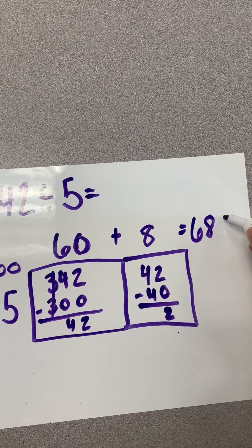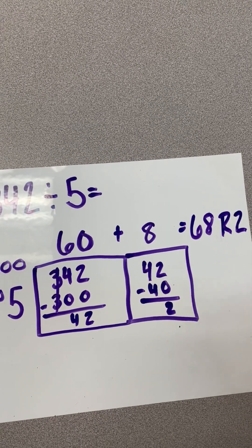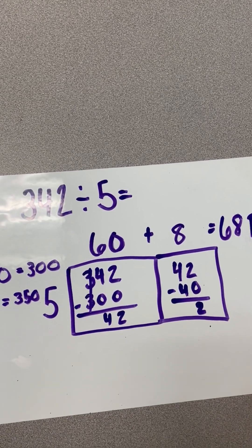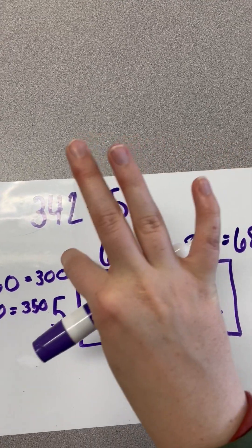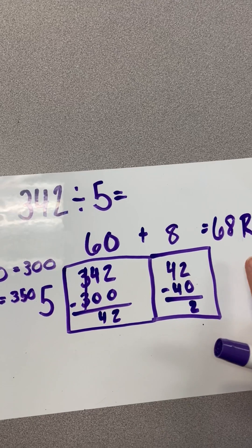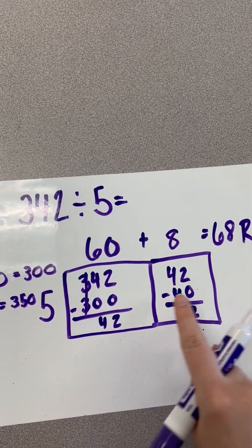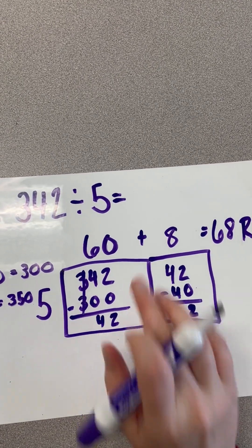And when we have a remainder, we just put a capital R, and the remainder, in this case, is 2. Now, to check our answer, we can use multiplication. If we think back to our area model of multiplication, we had our 2 numbers on the outside, and now we do. So, we can go ahead and check. We have 68, and we're going to multiply it by 5. And we should get our inside number, our dividend, which is 342.